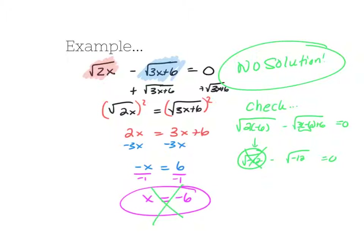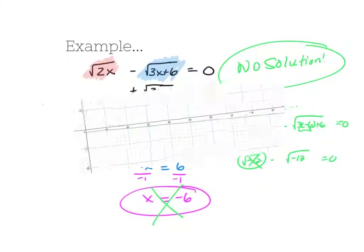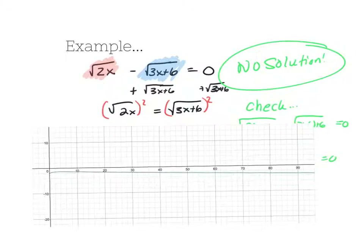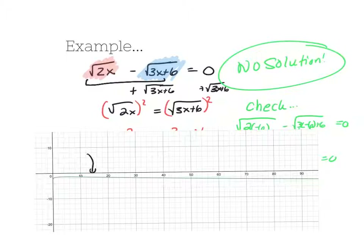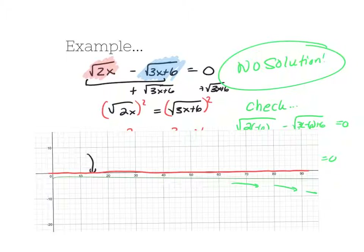Looking at the graph on the calculator, we can see the square root equation on the left side of the equation graphed. Asking when it ever equals 0 — it will never touch the x-axis. The green curve continues to go downward and never intersects the x-axis, confirming there is no real solution.